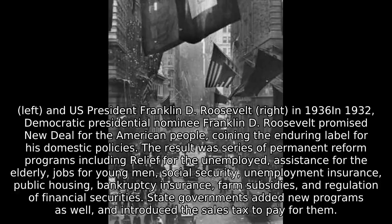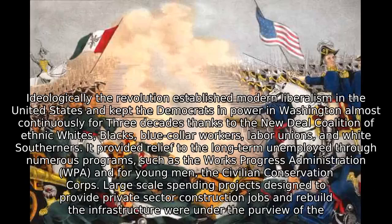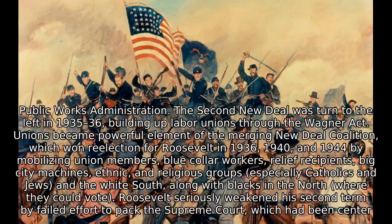State governments added new programs as well and introduced the sales tax to pay for them. Ideologically, the revolution established modern liberalism in the United States and kept the Democrats in power in Washington almost continuously for three decades, thanks to the New Deal coalition of ethnic whites, blacks, blue-collar workers, labor unions, and white southerners. Programs such as the Works Progress Administration (WPA) and the Civilian Conservation Corps provided relief to the long-term unemployed and young men. The second New Deal shifted left in 1935–36, building up labor unions through the Wagner Act.